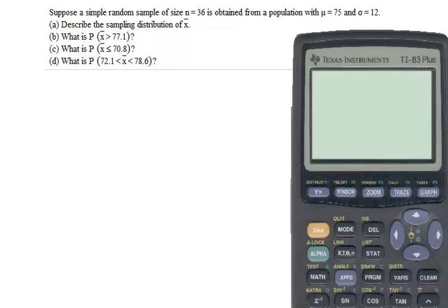So because we have an n that's bigger than 30, I believe that this text uses 30 as the threshold to cross, we can assume that it's going to be approximately normal. So that's part A. Part B through D is usually where the questions come, so let's look at this.